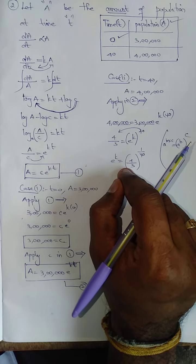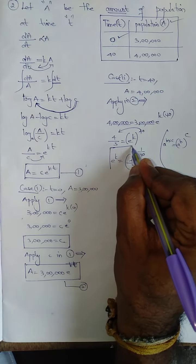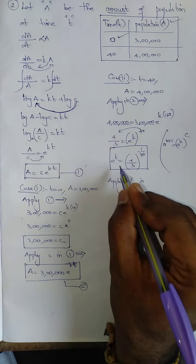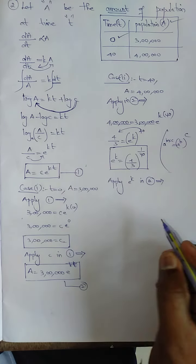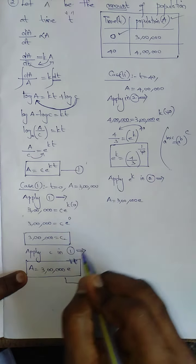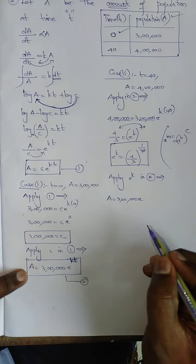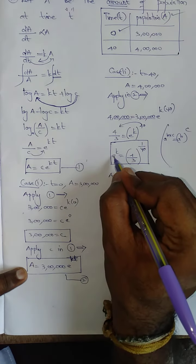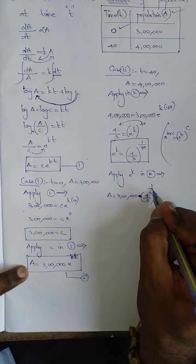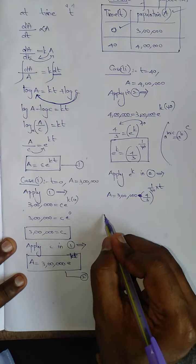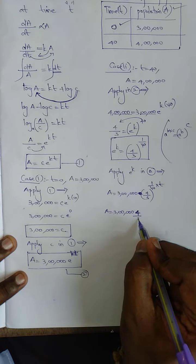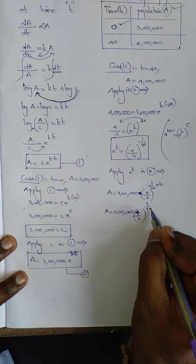We have found e^k: e^k = (4/3)^(1/40). Now apply e^k into equation 2. A = 3 lakh × e^(kt) = 3 lakh × [(4/3)^(1/40)]^t = 3 lakh × (4/3)^(t/40), since (1/40) × t = t/40.